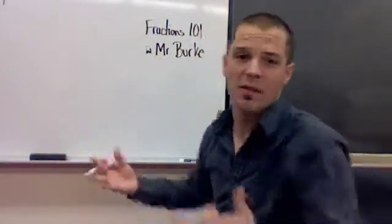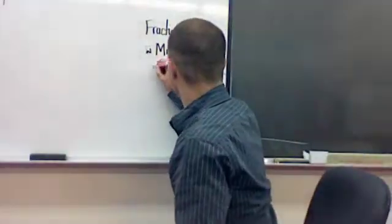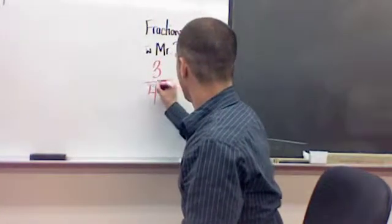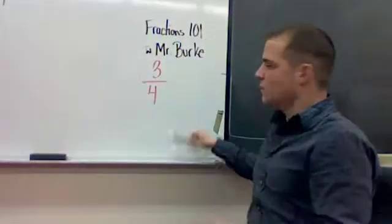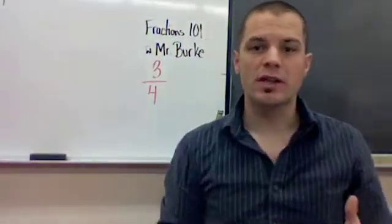So I'm pretty sure you all are already aware of what a fraction looks like. But if you're not, that's where we're going to start. So a fraction is a number that looks sort of like this. Let's take 3 over 4. So this is 3 over 4, or as we would say, 3 quarters.